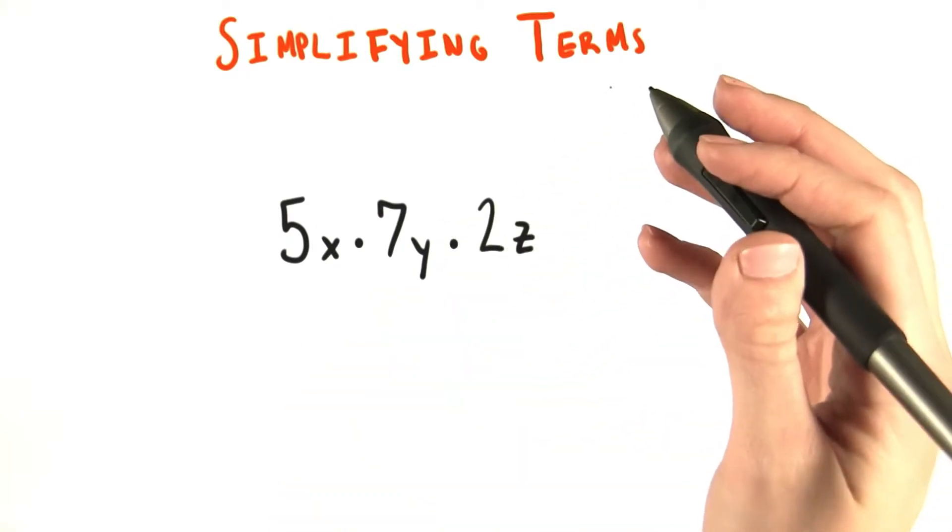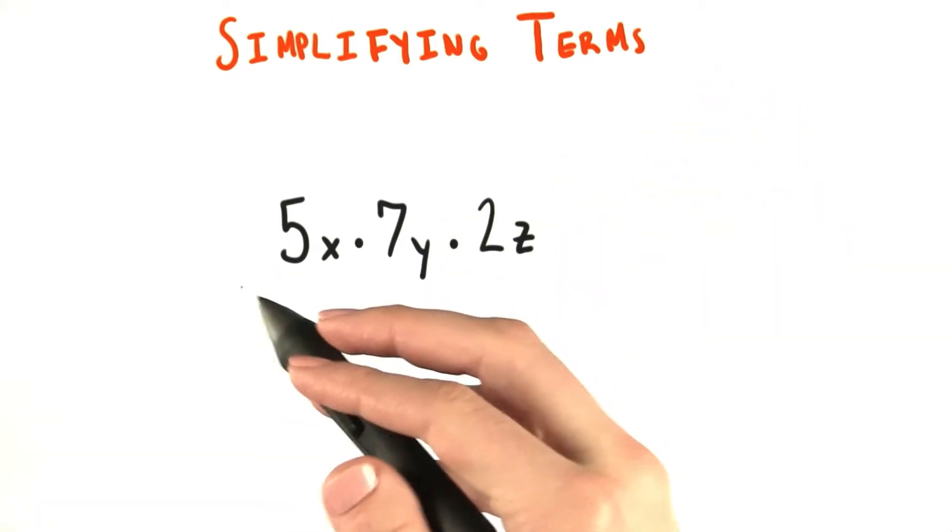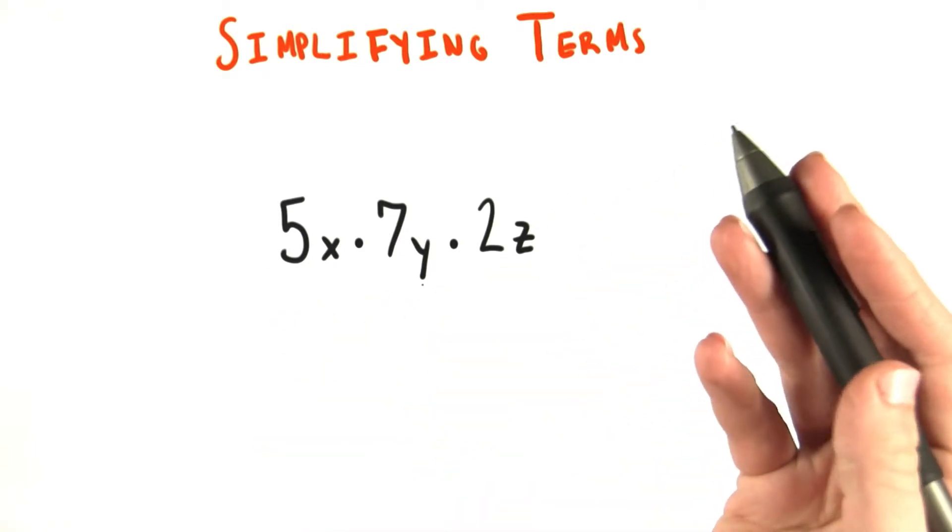We can start to use what we just learned about commutativity to rearrange all the factors that are multiplied together here, in whatever way we want to.